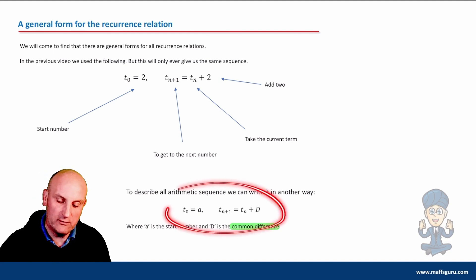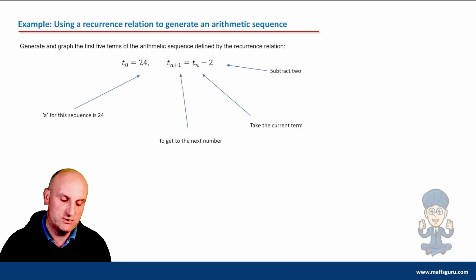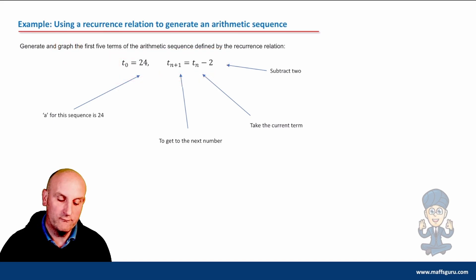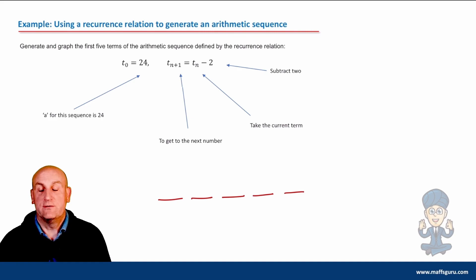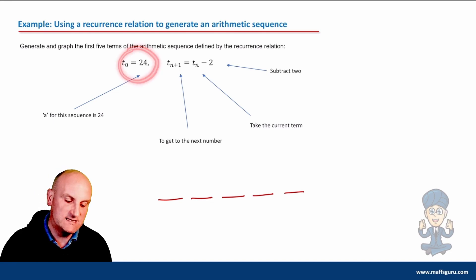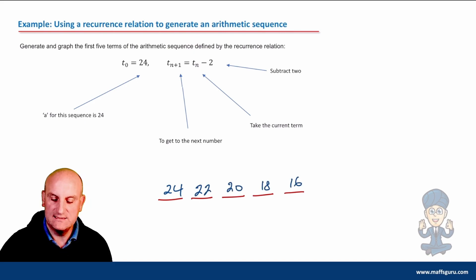So generate and graph the first five terms of the arithmetic sequence defined by this recurrence relationship. The first thing I want to do is get my actual numbers — five terms. So we know my first term is 24. What is my rule? To get to my next term, I take my current term and subtract two. So that gives me 22, 20, 18, and 16. Those are my numbers.